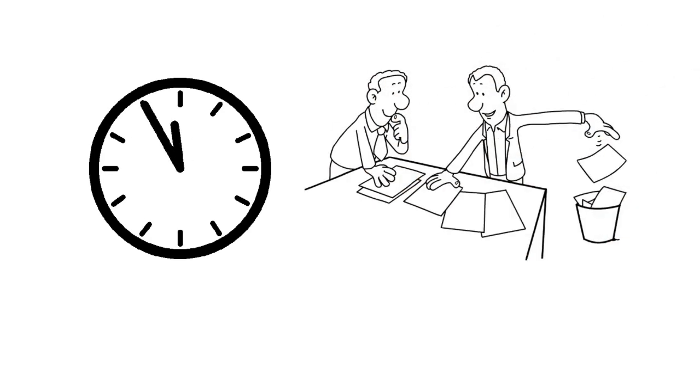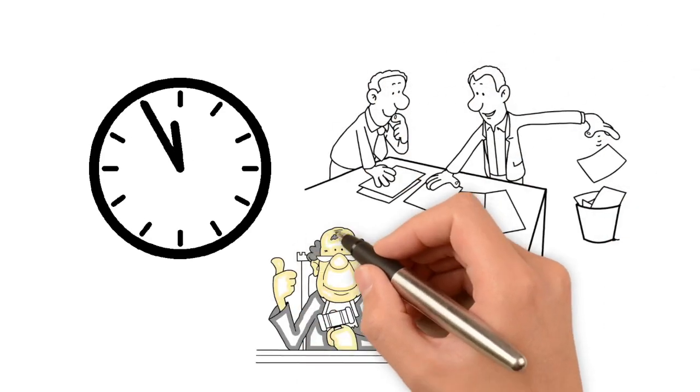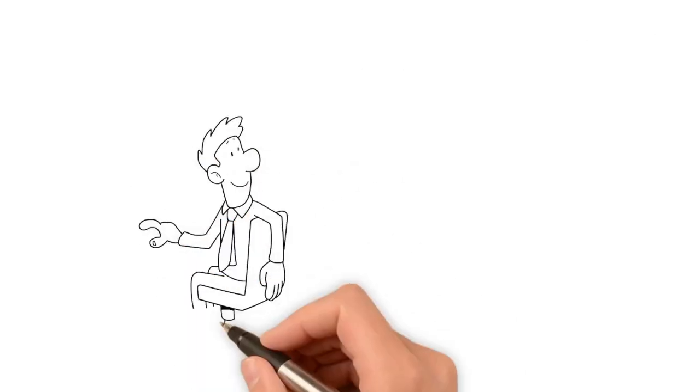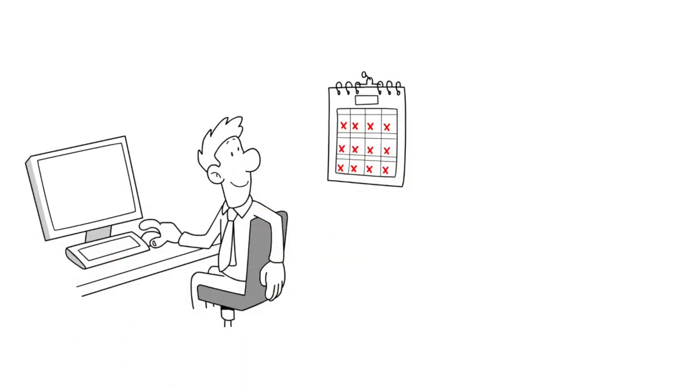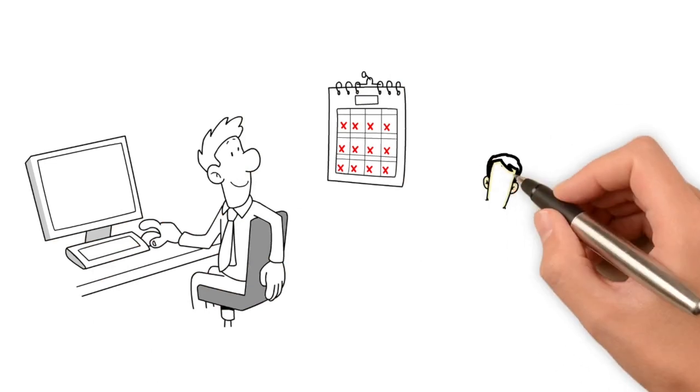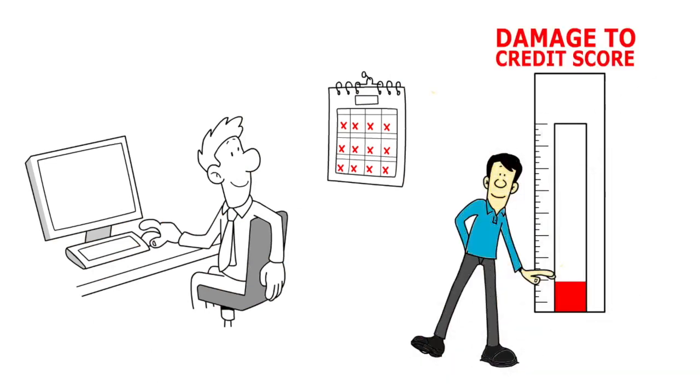Once that happens, a timer starts which counts down to the day the account will eventually come off your report, in accordance with federal reporting laws. The older the collection or charge off is from the original day of default, the less damaging it becomes to your credit score.